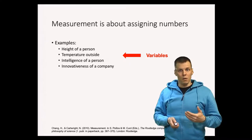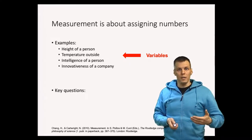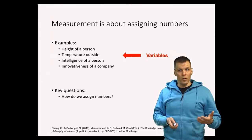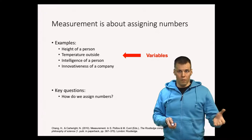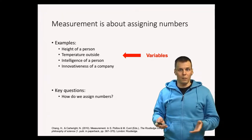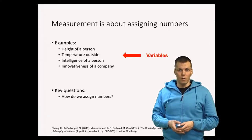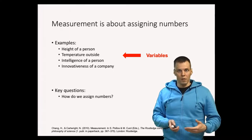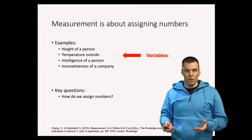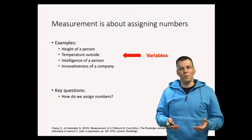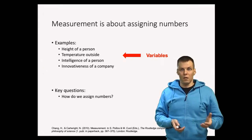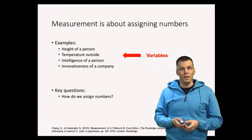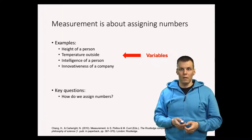There are three key questions when you do measurement. The first is: where do you get the numbers? How do we assign and quantify the height of a person? For height that's obvious — we use a measurement tape. For temperature we use a thermometer, and there are different kinds of thermometers you can apply. But how do you quantify things that are not physical quantities, like innovativeness or intelligence? That's less straightforward, and there are different ways of doing it.